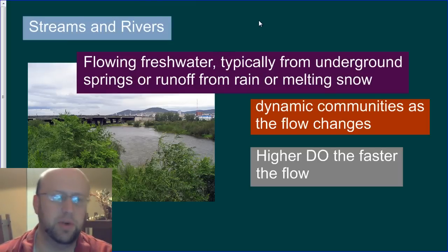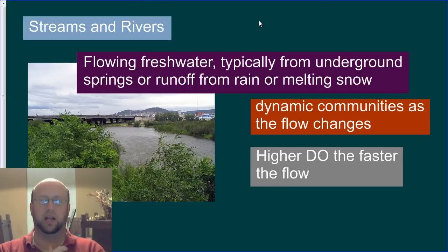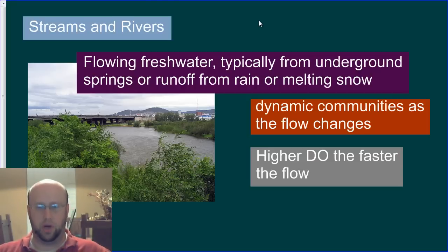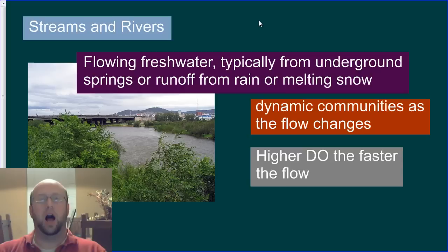So, streams and rivers — the essential characteristic there is that the water is flowing. That flowing water typically comes from two places: either an underground spring where there's an aquifer releasing water to the surface, or, more commonly, runoff from rain and melting snow, with watersheds that feed into some sort of stream or river system. We'll go into a lot of detail on that later. It's really important for us in East Tennessee because the TVA basically controls our river system here in a pretty dramatic way — it's one of the most controlled large bodies of water in the world.